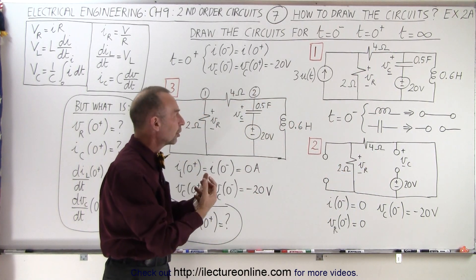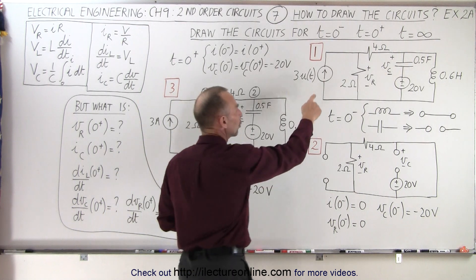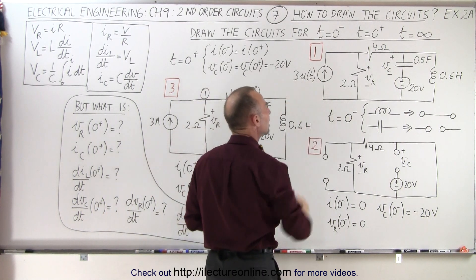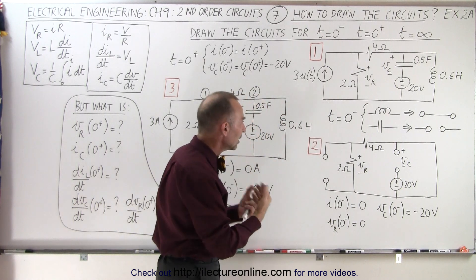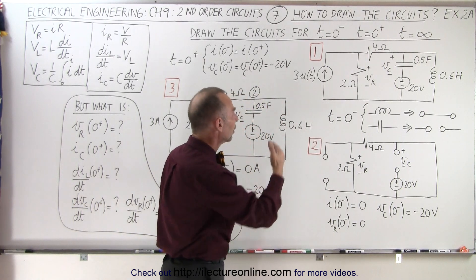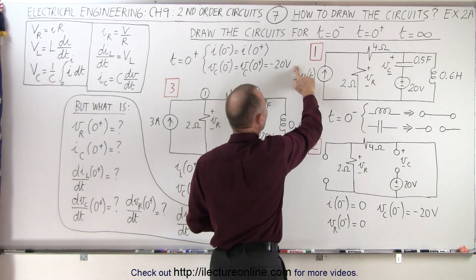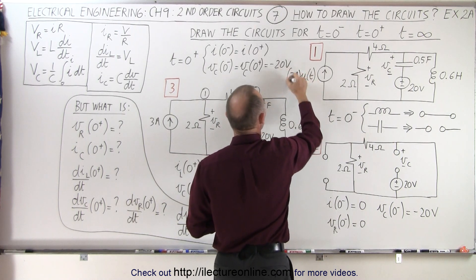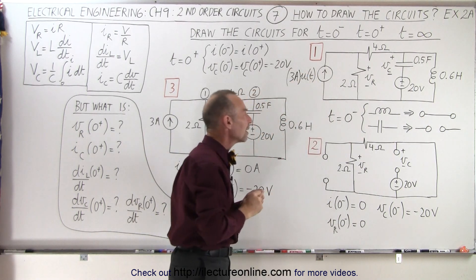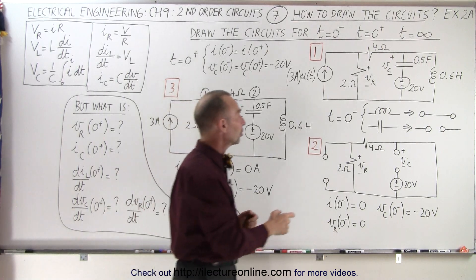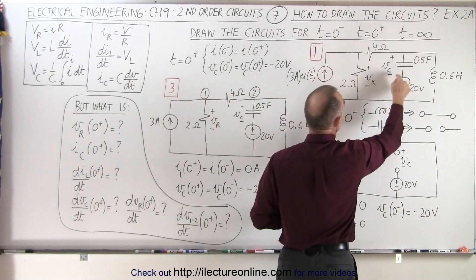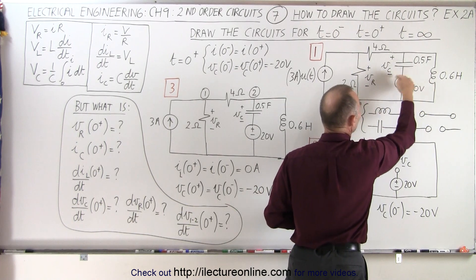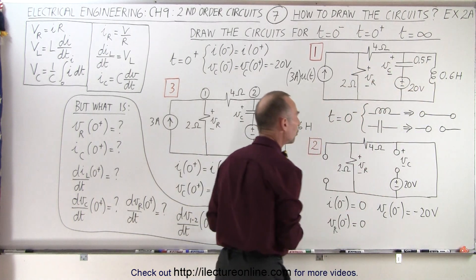So what's the event we're looking at here? There is a current source that turns on as a step function when t equals zero. After t equals zero this becomes a three amp — I forgot the amp symbol here — three amp step function starting at time equals zero. The rest of the circuit has a couple of resistors, a capacitor, an inductor, and a voltage source right in that branch.